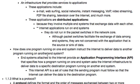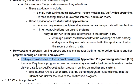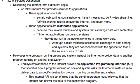So how does one program running on one end system instruct the internet to deliver data to another program running on another end system? End systems attached to the internet provide an API — application programming interface — that specifies how a program running on one end system asks the internet infrastructure to deliver data to a specific destination program running on another end system. This internet API is a set of rules that the sending program must follow so that the internet can deliver the data to the destination program.